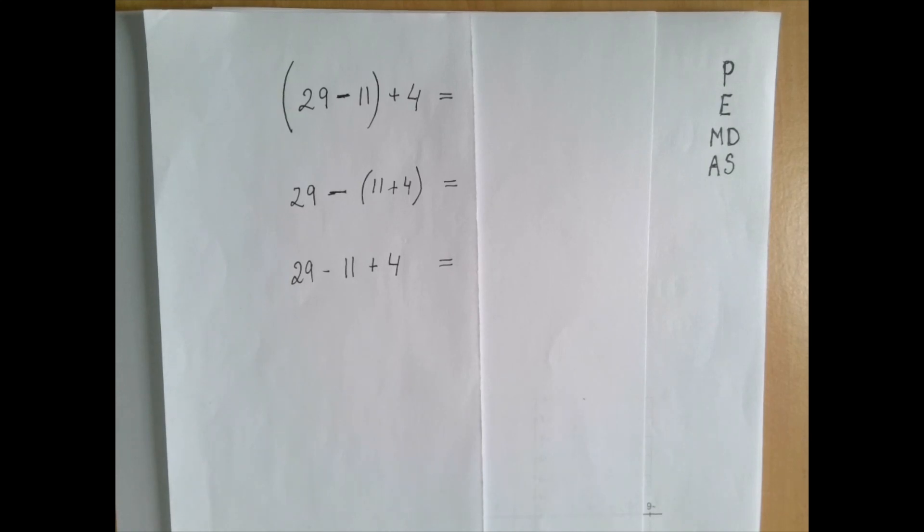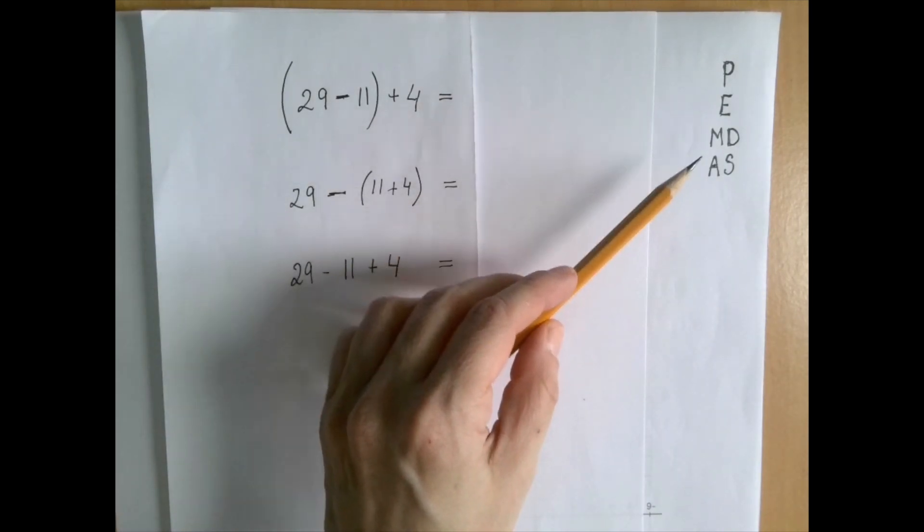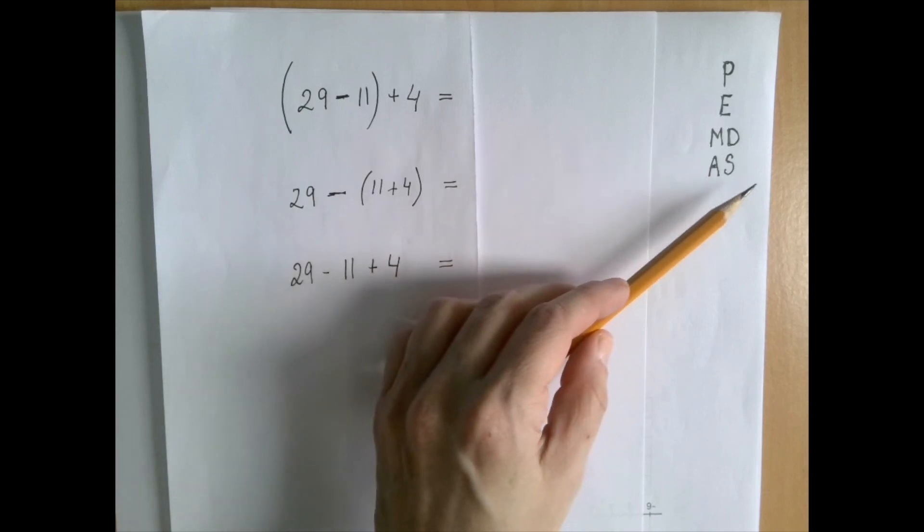It's important because this problem brings up a trouble spot in the order of operations agreement. The hierarchy is parenthesis, exponents, multiplication, division, addition, subtraction.